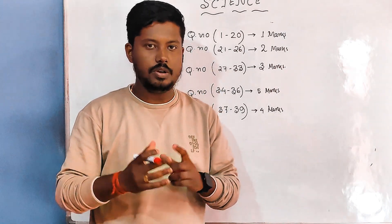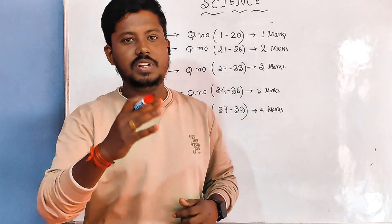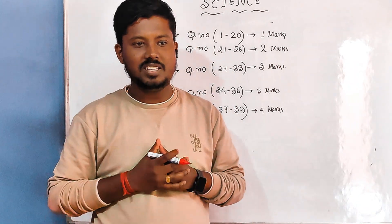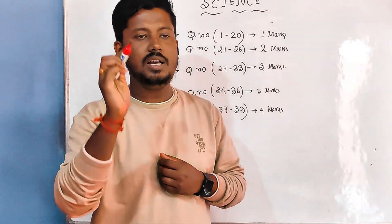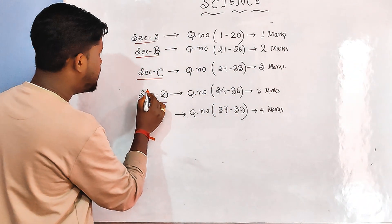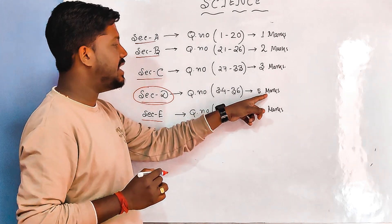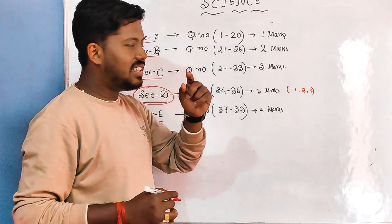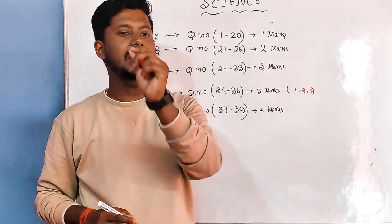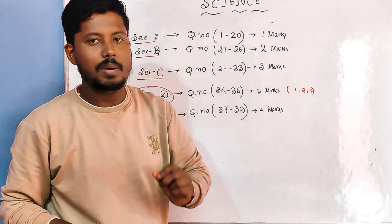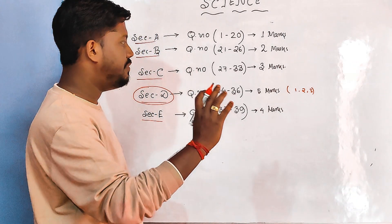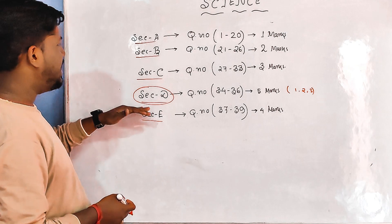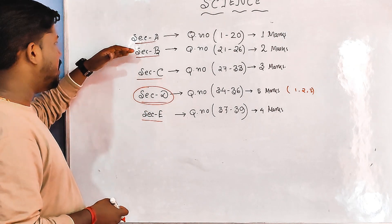First you need to see the question paper. If you follow my suggestion, you need to start from Section D — the five-mark questions. There will be three questions. Set the target that out of 15 marks, at any cost your marks will be 15 out of 15. Now you start from Section D.